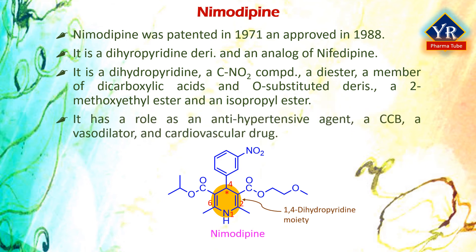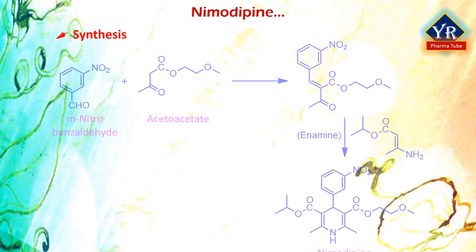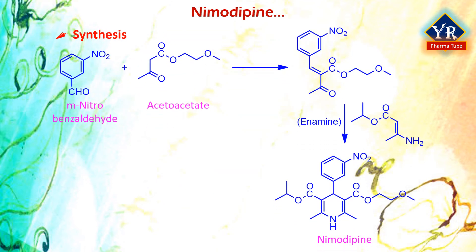It contains a stereocenter that can exist as either of two enantiomers, that is R and S forms. It is a dihydropyridine, a carbon nitro compound, a diester, a member of dicarboxylic acids and oxygen substituted derivatives, a 2-methoxyethyl ester, and an isopropyl ester. It has a role as an antihypertensive agent, a calcium channel blocker, a vasodilator, and a cardiovascular drug. An important compound acetoacetate for the synthesis of nifedipin is obtained by alkylation of sodium acetoacetate with 2-methoxyethyl chloride. Aldol condensation of metanitrobenzene and subsequent reaction of the intermediate with enamine gives nemodipin.